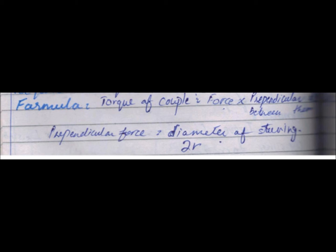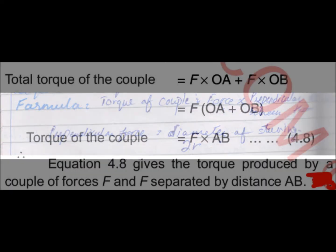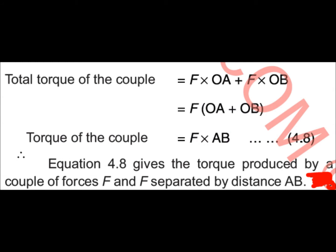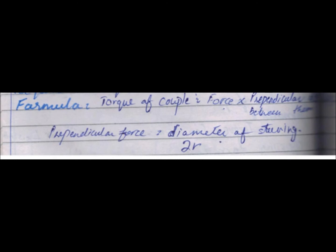So we have two forces applied as a couple on the steering wheel. As shown on page number 96, the total torque equals force into perpendicular distance of force. The perpendicular distance is equal to the diameter of the steering wheel, which is 2r.